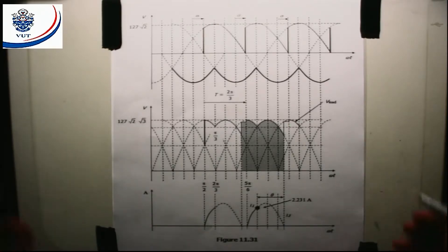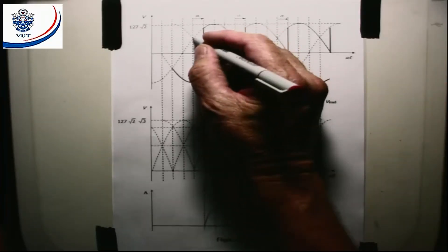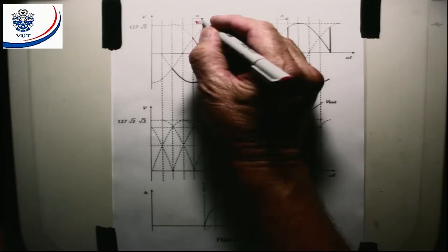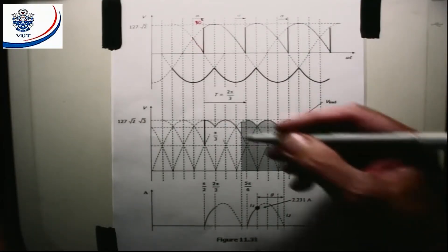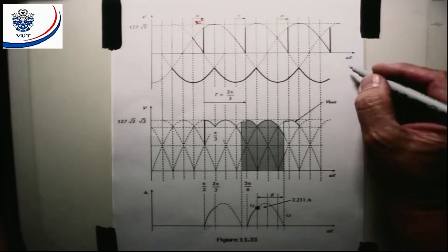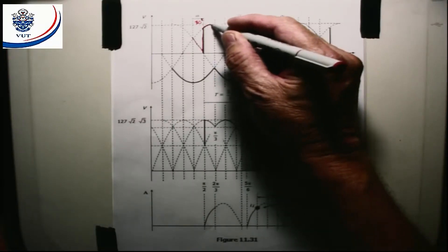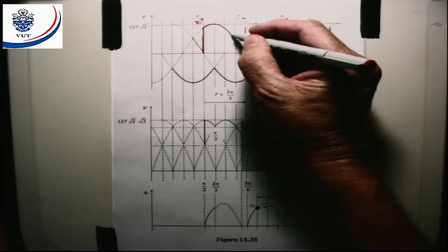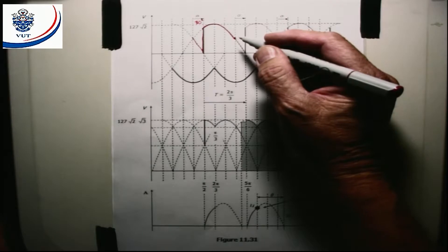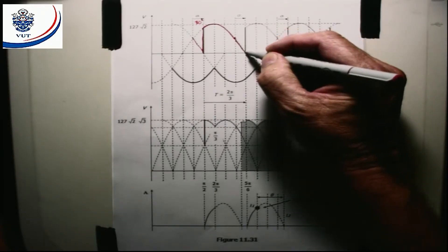You'll see that our three thyristors will only fire after 30 degrees — there's our 30 degrees. When we look at what will appear over the motor on the positive side, after 30 degrees we will follow this line here. When we reach this point, a diode would have switched on, but there's no diode in the circuit — there is a thyristor. So we delay with another 30 degrees.